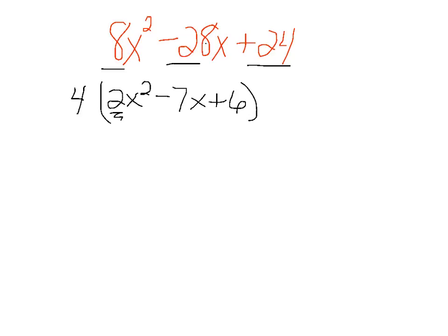Now, multiplying 2 times 6 is 12. We want to know what multiplies to 12 and adds to negative 7. Well, I believe those numbers are negative 4 and negative 3.